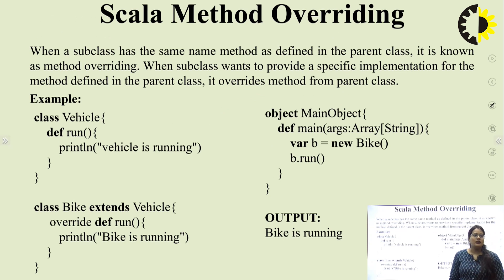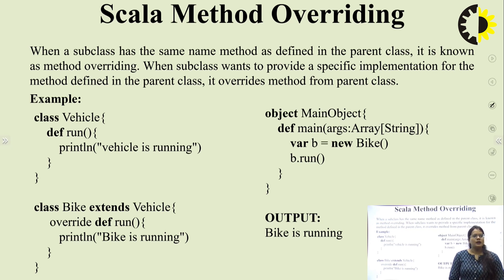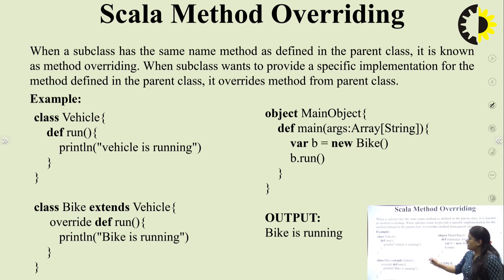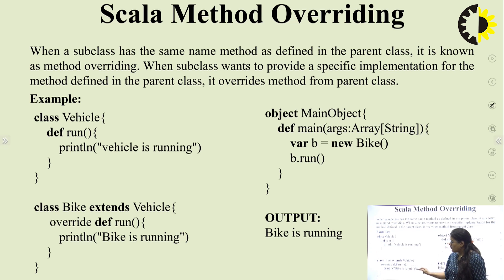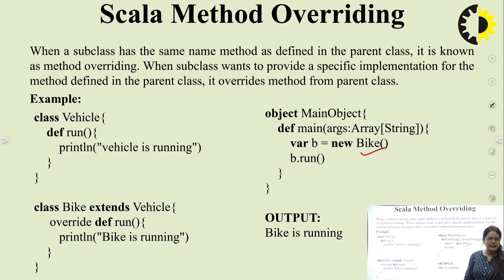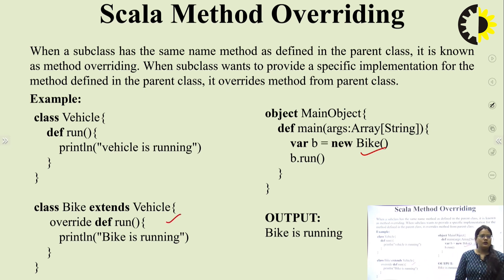The last topic is Scala method overriding. When a subclass has a method with the same name as defined in the parent class, it is known as method overriding. When a subclass wants to provide a specific implementation for a method defined in the parent class, it overrides the method using the 'override' keyword. Example: class Vehicle has def run() which prints 'vehicle is running'. Class Bike extends Vehicle and overrides run() to print 'bike is running'. When we create a Bike object and call b.run(), the overriding method executes. This is all about Scala — thank you so much.